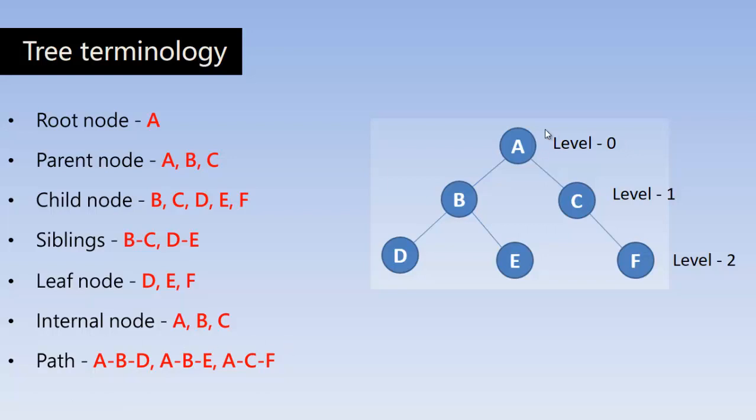Path is the set of nodes or a list of nodes that make a sequence. Here, A, B, D is one path because this is making one sequence here. A sequence of nodes makes a path. A, B, E is another path. A, C, F is one more path.